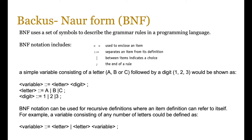BNF can also be used as a recursive definition, where an item definition can refer to itself. For example, a variable which can consist of any number of letters could be defined as: variable is equivalent to a letter, or a letter followed by variable again. You call it again — this is recursion. So you're calling itself, you go back to variable's definition again, which could be another letter or a letter and a variable. So you can have A, or A plus a variable, meaning A, AA, AAA, and so on — all of that's possible.